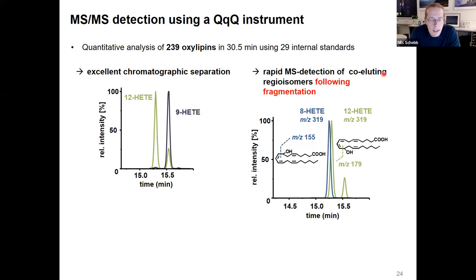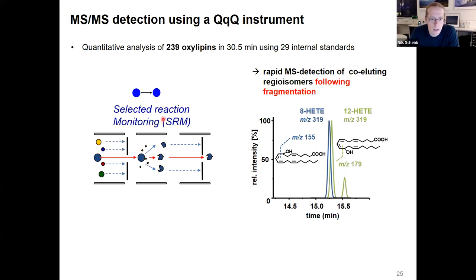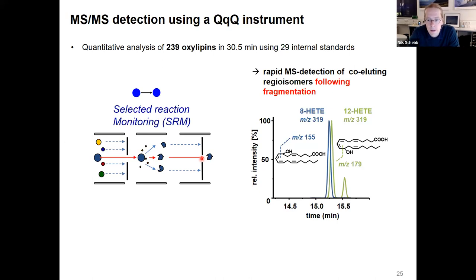Currently only triple quadrupole mass spectrometers are really feasible for the detection of oxylipins — on the one hand because of their sensitivity, and on the other hand because of their selectivity allowing detection of compounds after fragmentation. For example, ATB and 12-HETE cannot be separated chromatographically, but it's easy to keep them apart based on different fragmentation behavior. We detect compounds in the selected reaction monitoring mode: we select the M-minus-H ion after negative electrospray ionization, fragment the molecules, and detect a specific fragment, which together with chromatographic separation yields the selectivity we need.